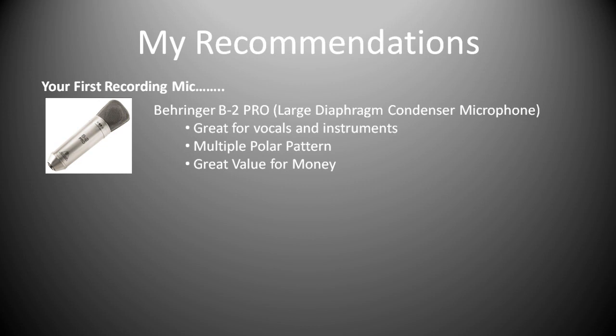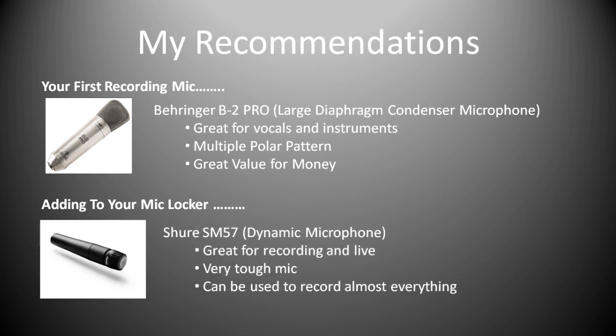If you're looking to add a mic to your mic locker and you've already got a large diaphragm condenser and you want something slightly different, you can't go far wrong with the Shure SM57. The SM57 is similar to the SM58 — it doesn't have the built-in windshield, but it has the same workings inside. They're great for recording drums, some people's vocals sound very good through them, and they're great for live performance too. They're an extremely tough microphone and can be used to record almost anything, giving you a couple of options when it comes to recording.